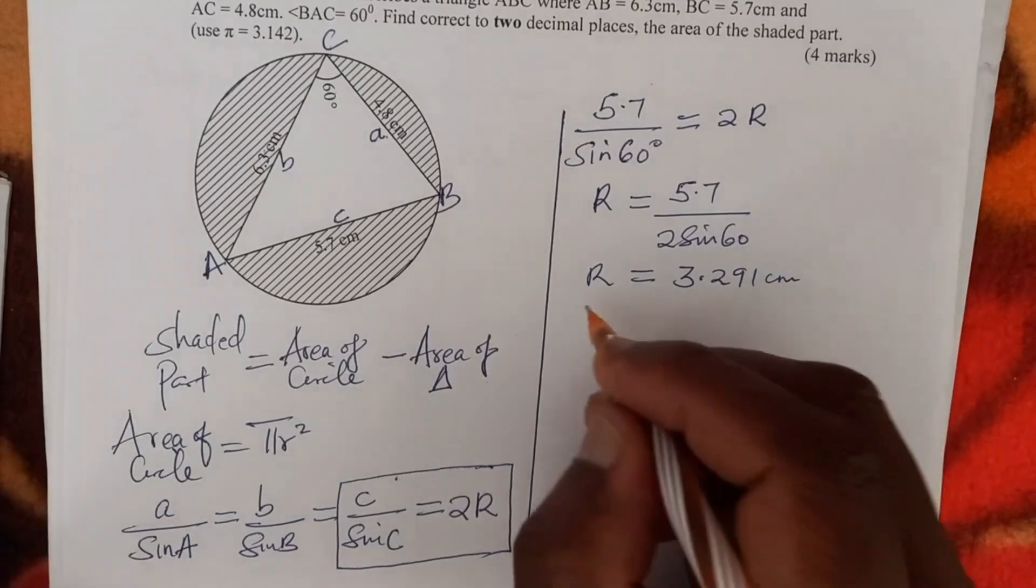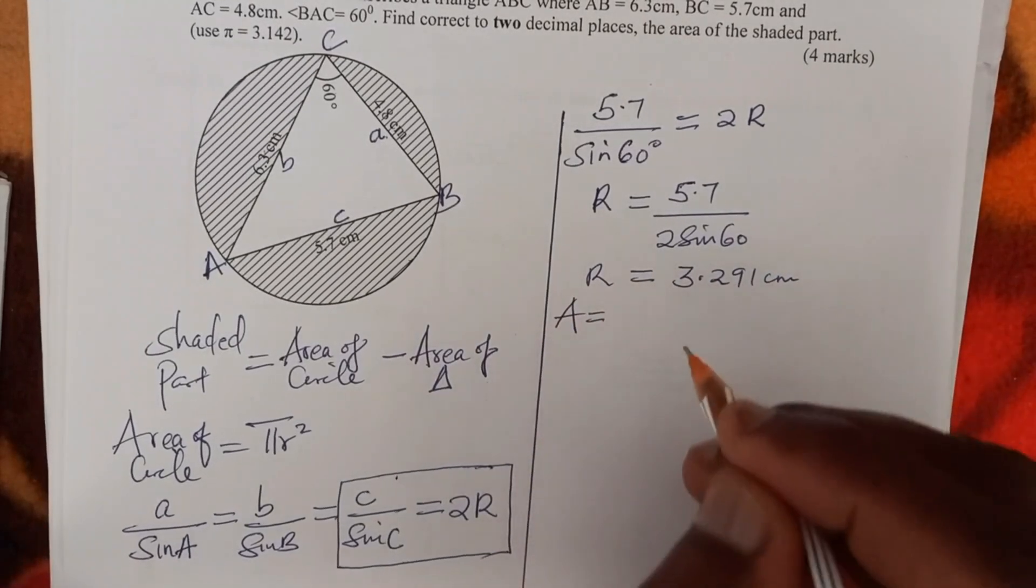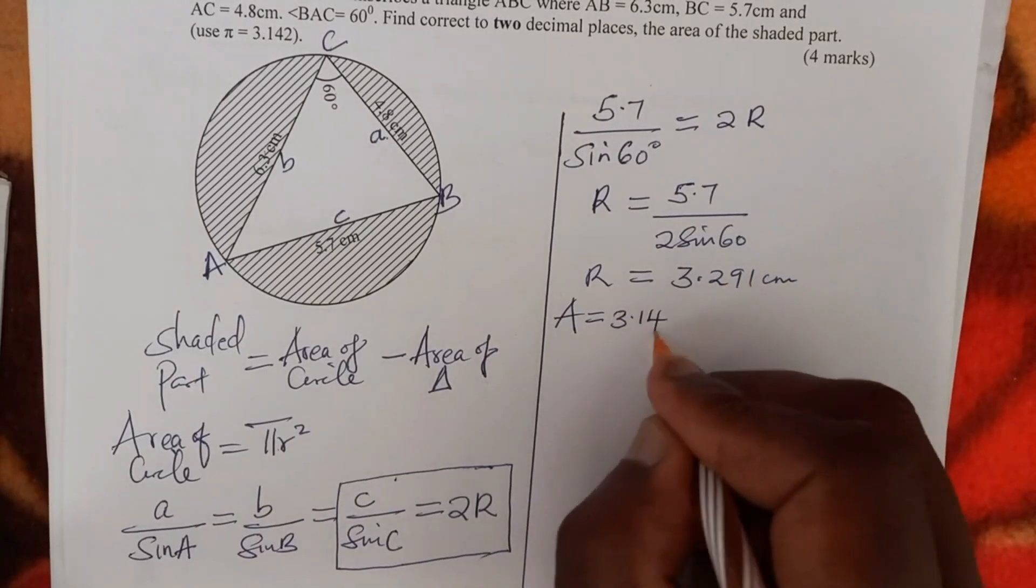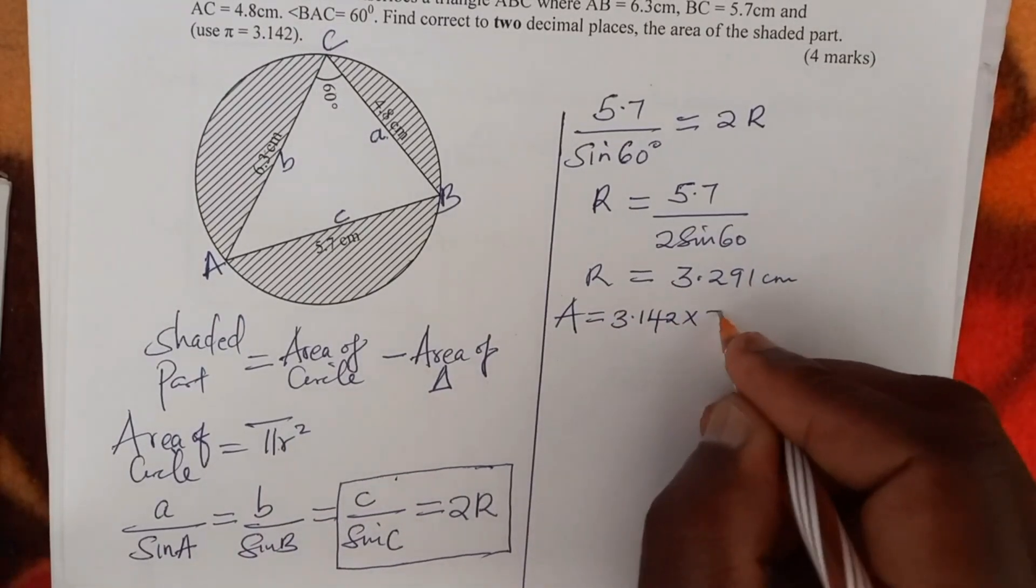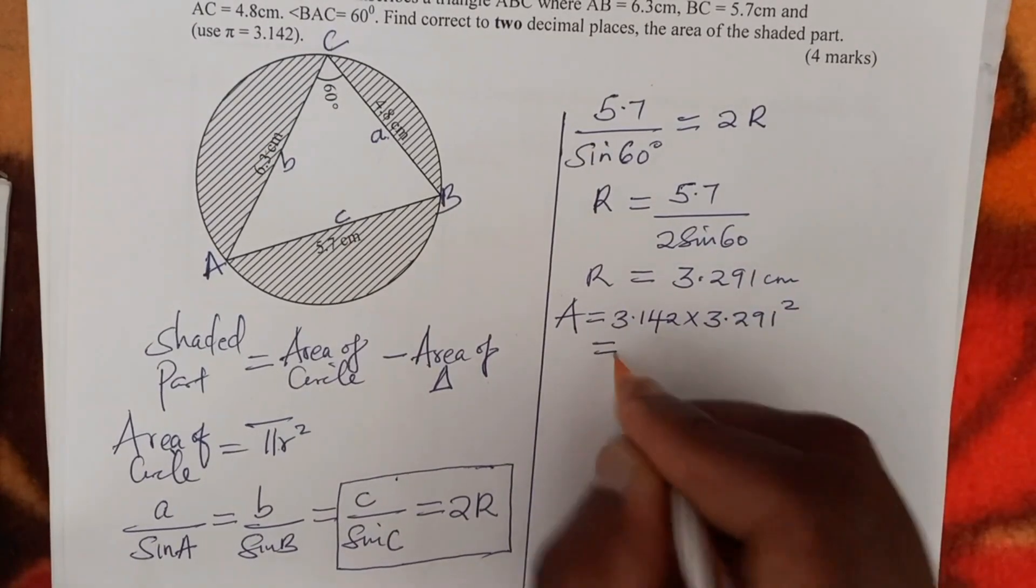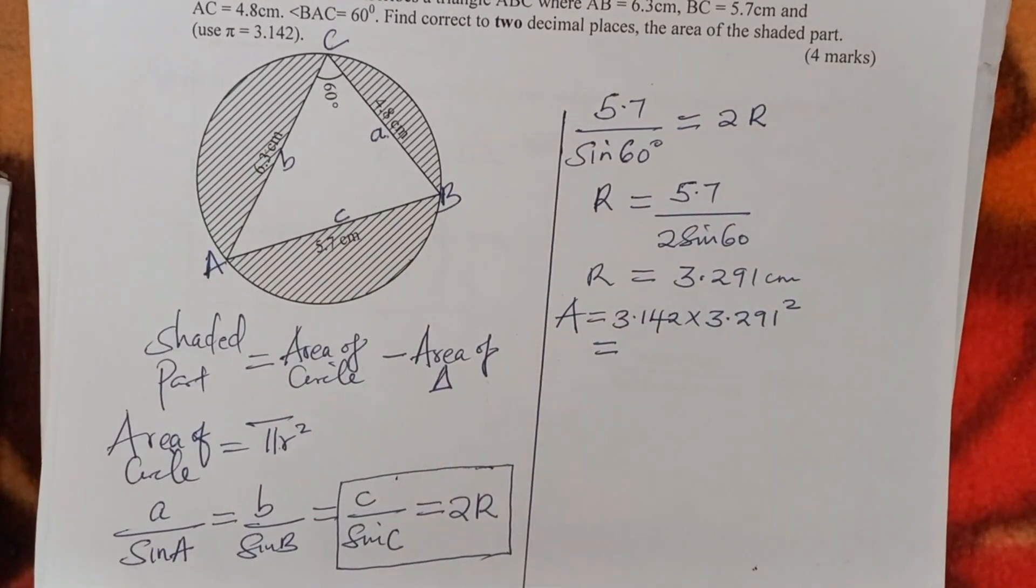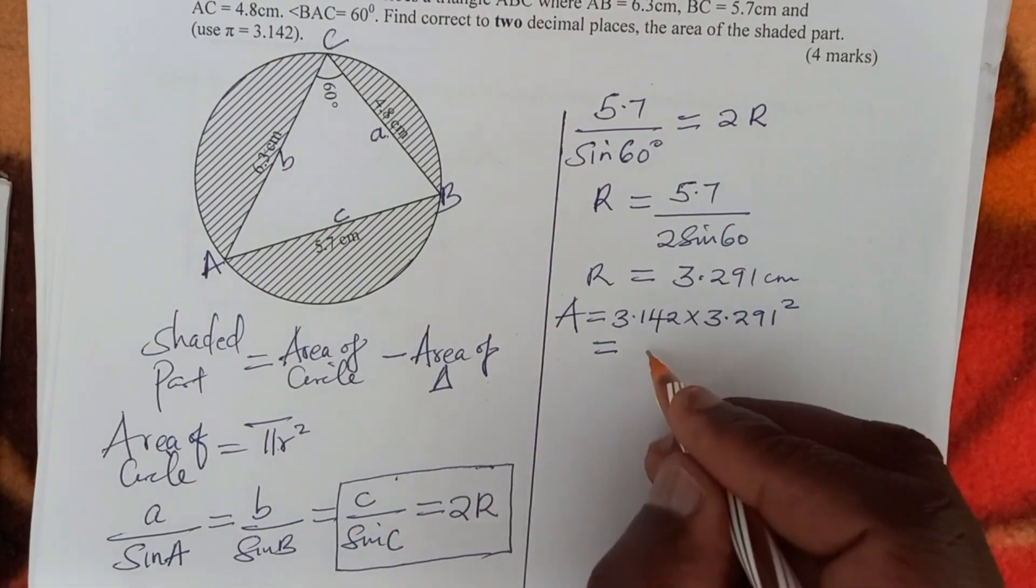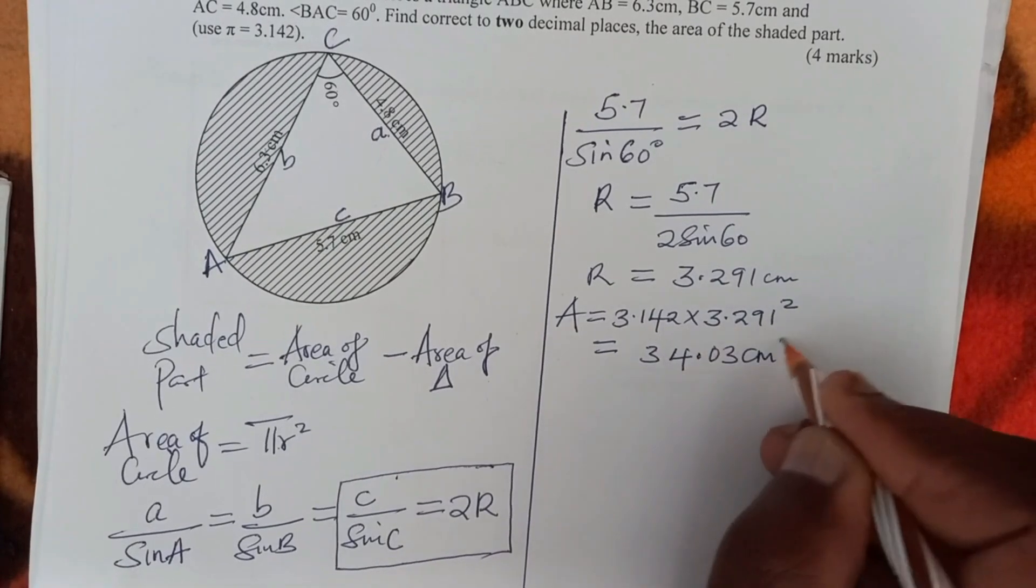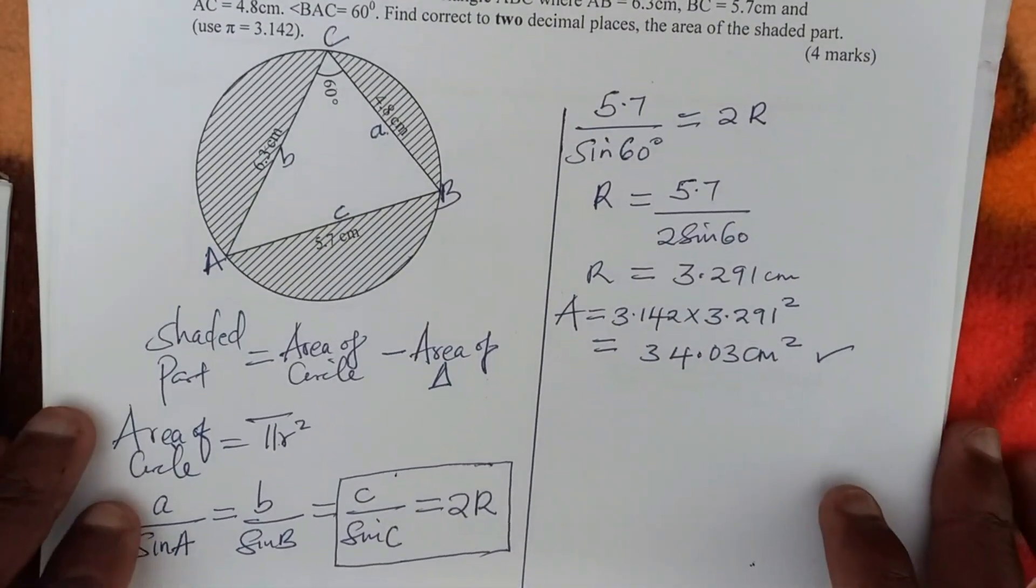So we have the radius. Now we can get the area of the circle. So area of the circle is given by pi R squared, which is 3.142 times the radius, which is 3.291 squared. So this will give us the area of the circle. Use a calculator to work out this. We give the answer to four significant figures. This will give 34.03 centimeters squared.